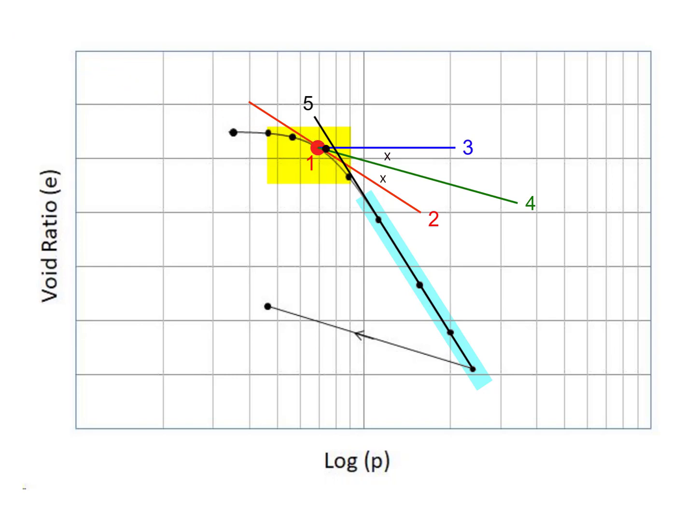This is point six. From that point, draw the PC line and record the pre-consolidation pressure magnitude. And this is step number seven.